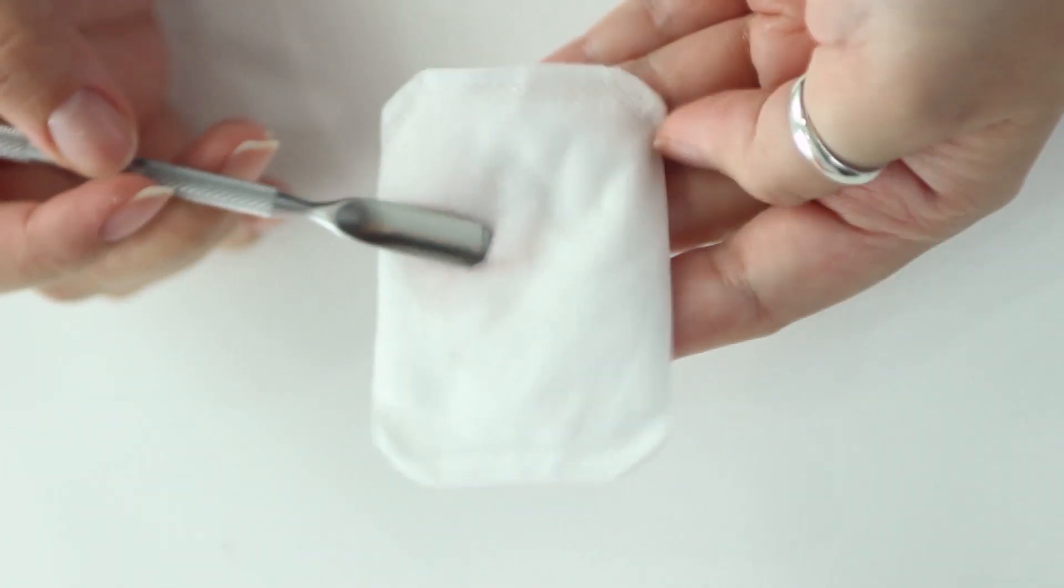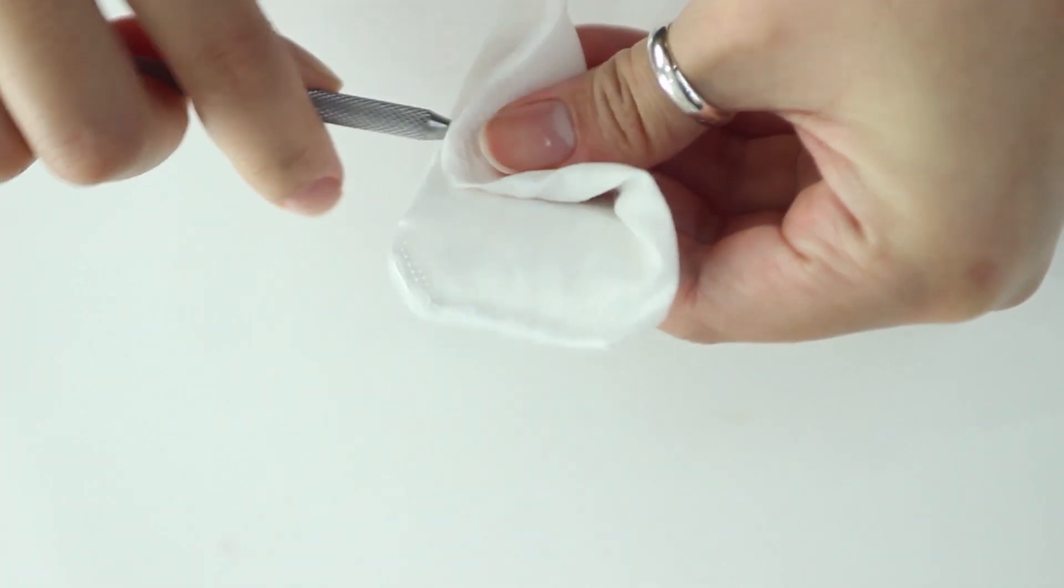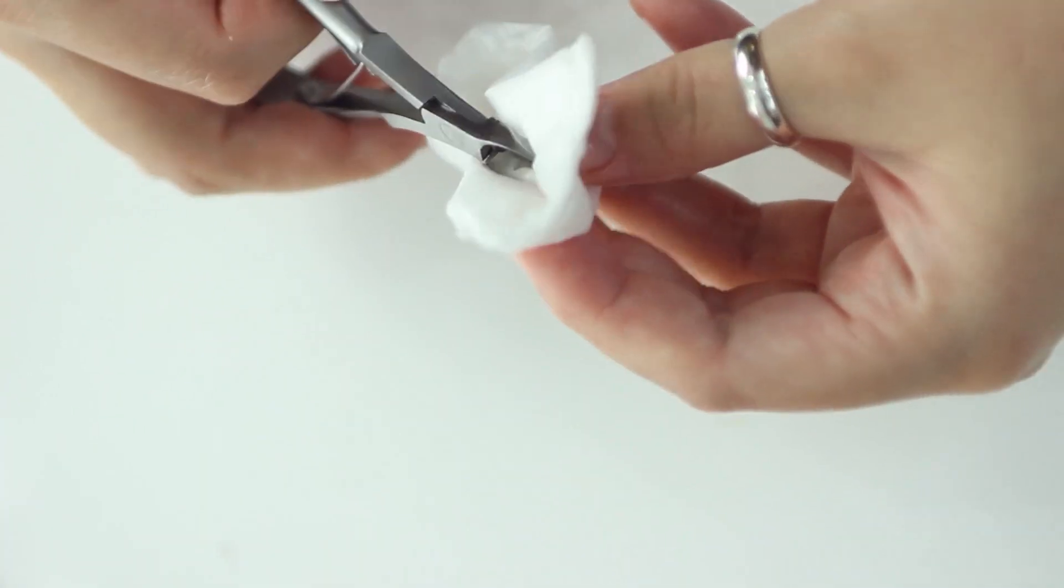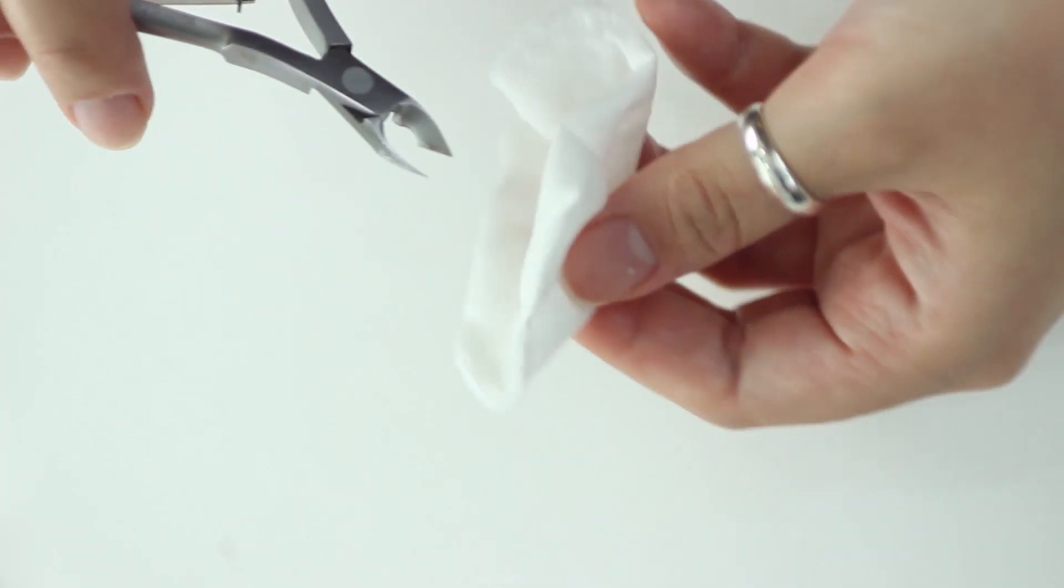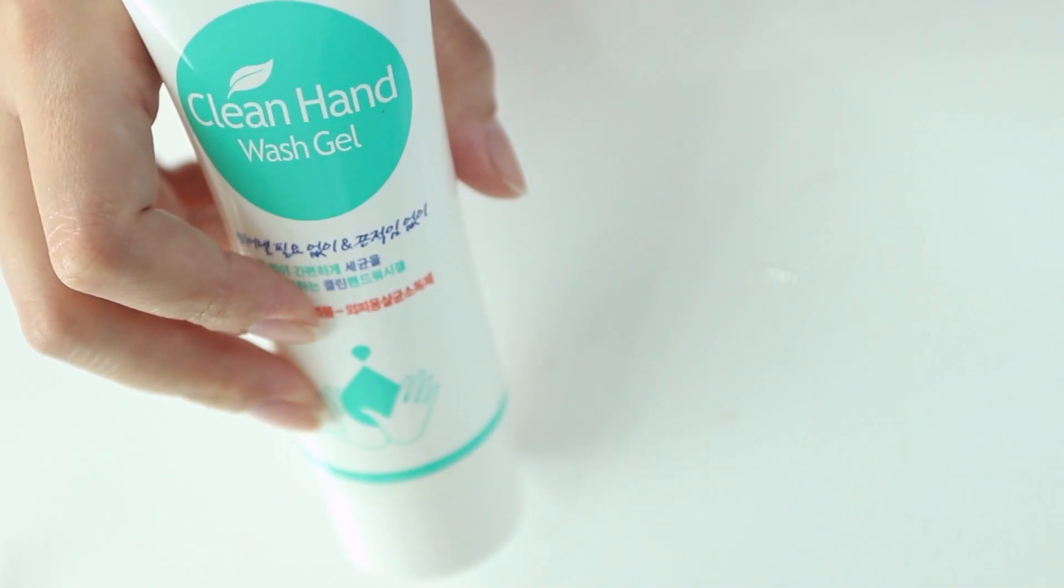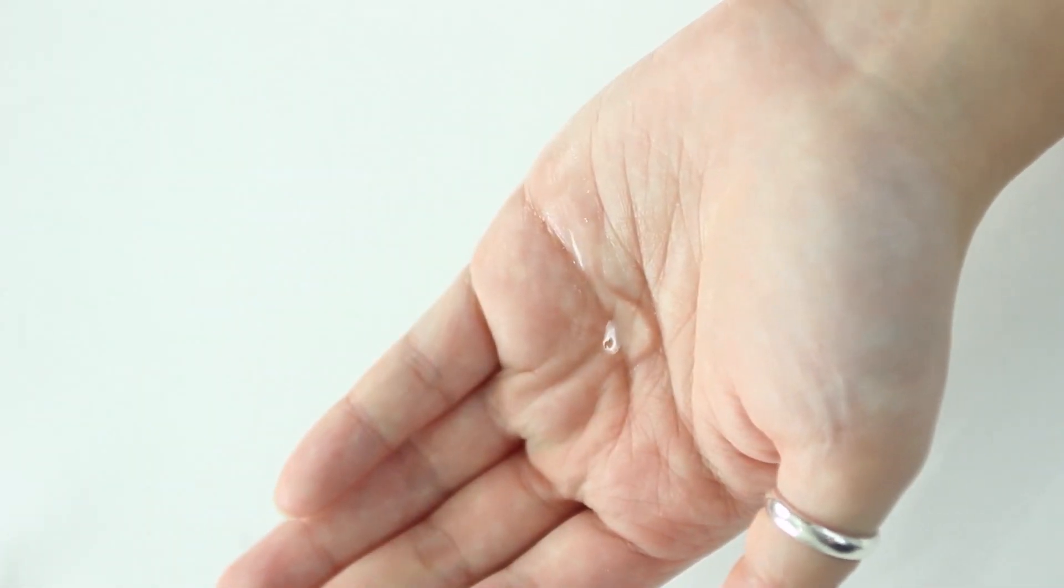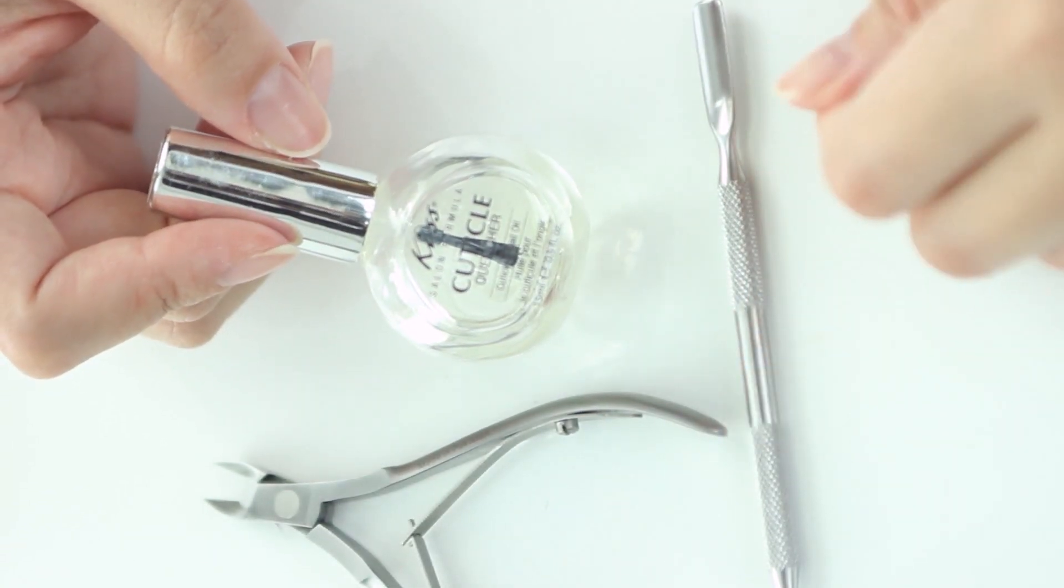Also, sanitation is key. Especially when you're using metal objects like these and especially if you're using it with other people. Always want to sanitize your tools with alcohol beforehand and then use it on yourself. You would also want to use a hand sanitizer or wash your hands before doing this process. I am not a professional nail artist but this is how I do it and you can also do it for yourself and it's super safe.